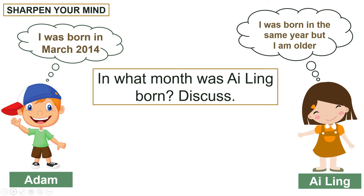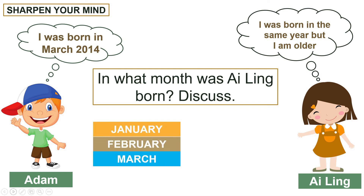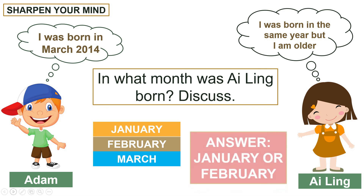Adam says: I was born in March 2014. Eilin says: I was born in the same year, but I am older. Dear pupils, in what month was Eilin born? Let's discuss — Adam was born in March. If Eilin is older, she must have been born before March. What month comes before March? Yes, you are correct — it is January and February, so Eilin was born either in January or February.